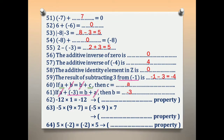Number 62: negative 12 times 1 equals negative 12. The name of 1 in multiplication is multiplicative identity. This property is multiplicative identity.